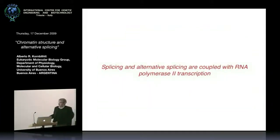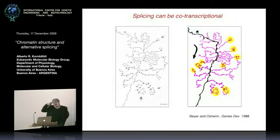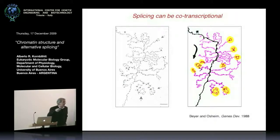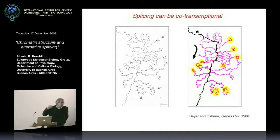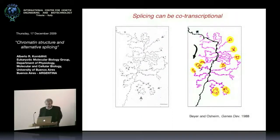Splicing and alternative splicing are coupled to transcription, as a consequence of splicing being co-transcriptional. Just as when we found alternative splicing in the fibronectin gene some 20-something years ago we thought it was an exception, and now we know it's a rule — when we started to study splicing as a co-transcriptional event, we thought only a certain percentage could be co-transcriptional. Now genome-wide studies show that co-transcriptionality is probably the rule for most splicing and alternative splicing events.